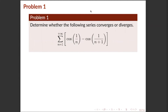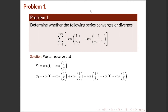Determine whether the series of cos(1/n) minus cos(1/(n+1)) converges or diverges. We can observe that the partial sum s_1 equals cos(1) minus cos(1/2). The partial sum s_2 equals cos(1) minus cos(1/2) plus cos(1/2) minus cos(1/3). Observe that we can cancel out cos(1/2), leaving us with cos(1) minus cos(1/3).